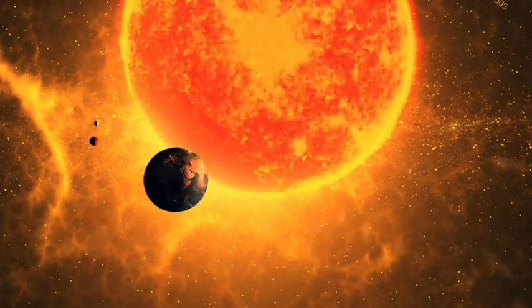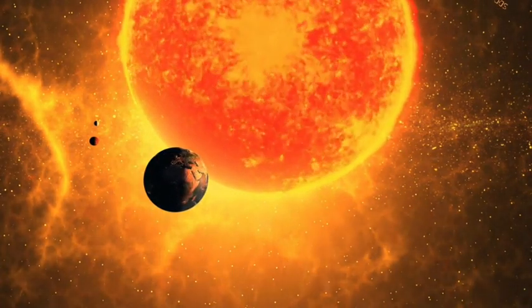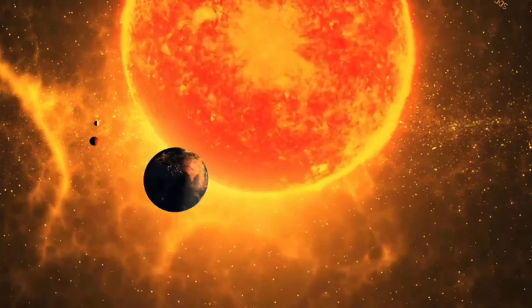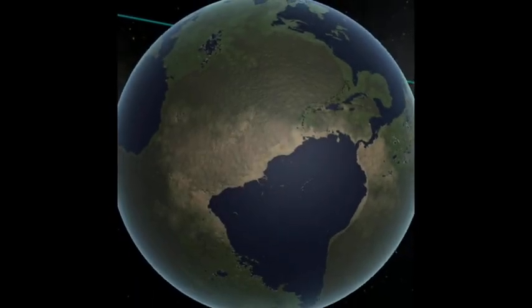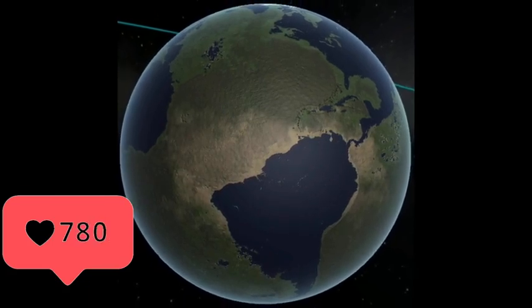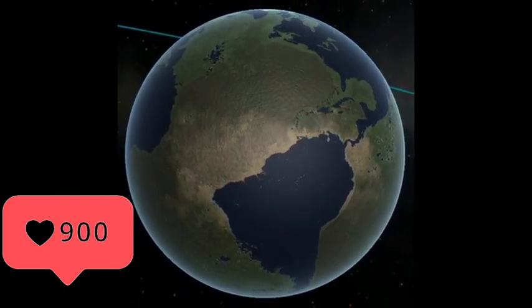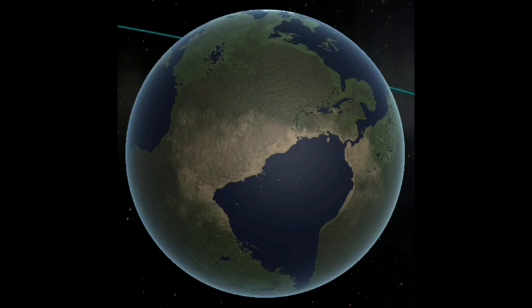The idea of a planet in the same orbit as Earth, but permanently hidden behind the Sun, is not new. It dates back at least 2,400 years to the Greek philosopher Philolaus, who proposed the existence of a counter-Earth called Antichthon.